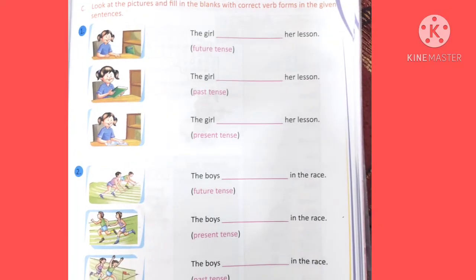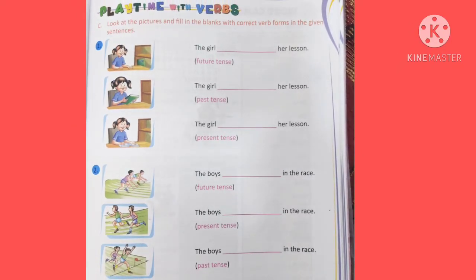Now let's look at Exercise C on the screen: fill in the blanks with the correct verb. Some pictures are given and according to the picture you have to fill the verb; the tense is also given in brackets. First picture: 'The girl dash her lesson.' In brackets it is future tense, so: 'The girl will learn her lesson.' Same sentence with past tense: 'The girl learned her lesson.' With present tense: 'The girl learns her lesson.'